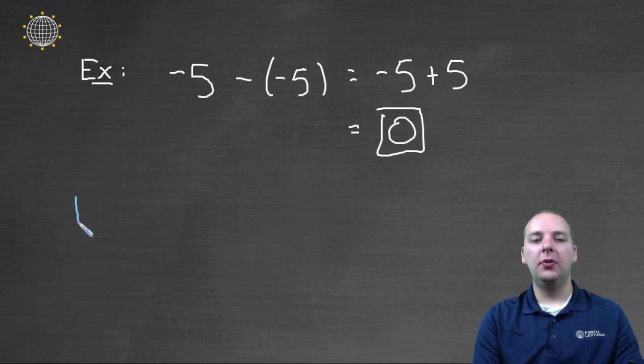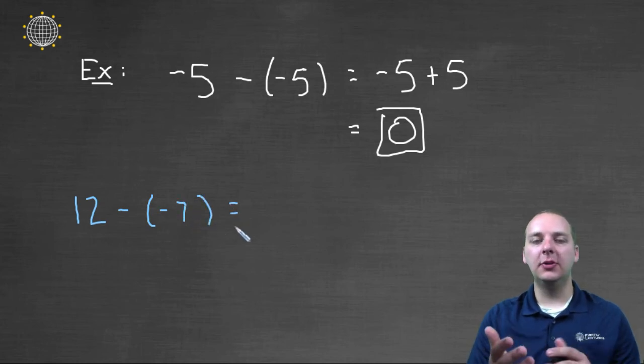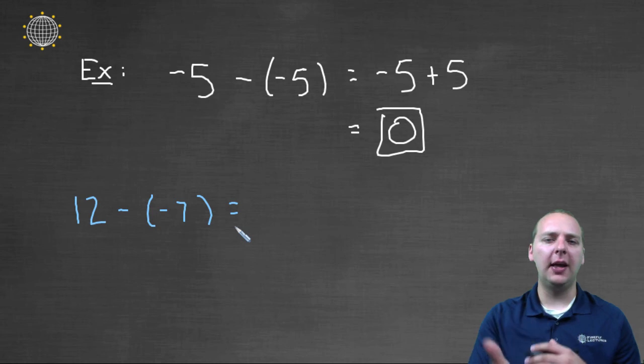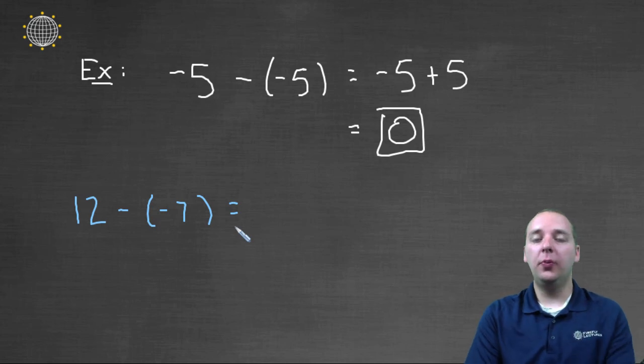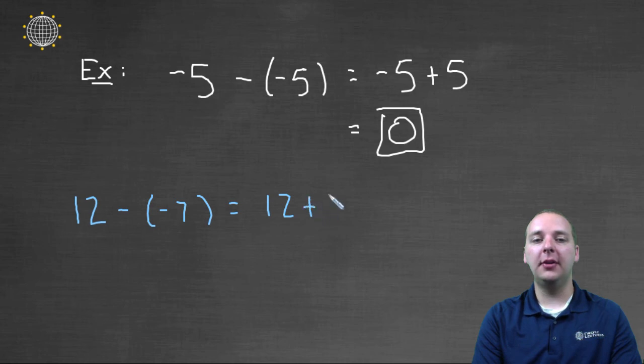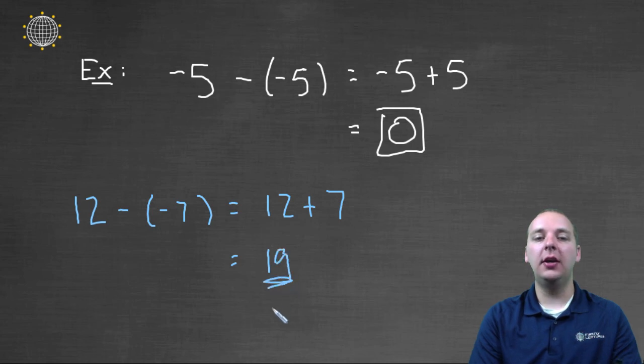Let's say you had twelve minus negative seven. We don't always have to think of this in terms of owing people money or paying them back. Now that we believe the rule, now that we're comfortable with the rule, we can just apply the rule. Twelve minus negative seven, that's simply twelve plus seven. I'm simply applying the rule here. I have confidence in the rule. Twelve plus seven is nineteen, and we're done.